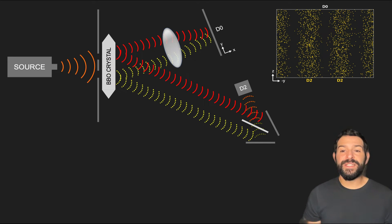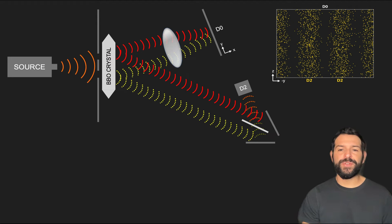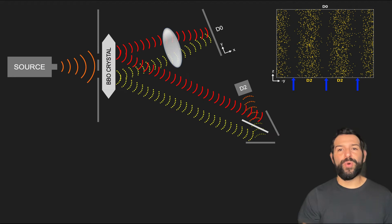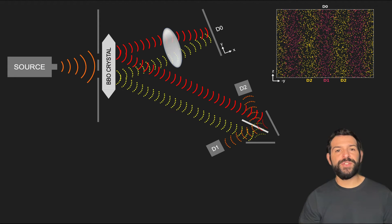So how can this be? If all the eraser does is scramble the which-path information, how can the information photon entangled with the screen photon that lands in, for example, these regions, know that it should never be directed to detector D2? Well, it turns out that even though it is correct that the setup scrambles the slit information, that is not the full story. This particular configuration actually does quite a bit more than just that.